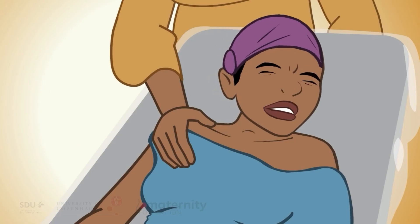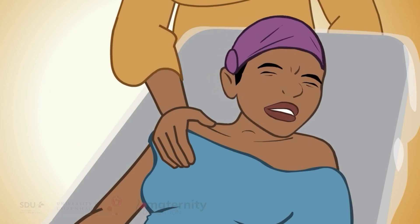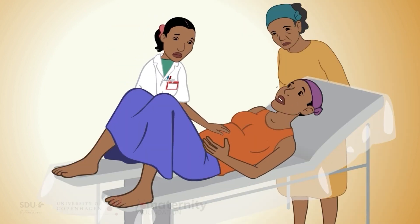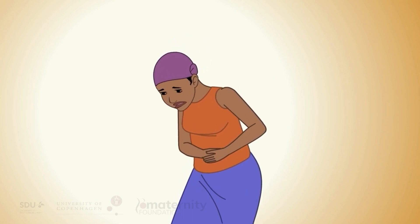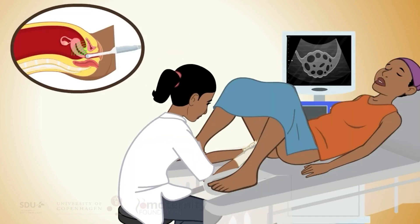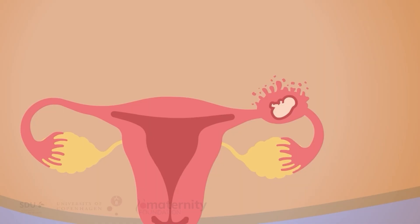Also consider ectopic pregnancy if there is pain beside the uterus either at abdominal or vaginal examination, strong abdominal pain with local or generalized defense — that is a tense and tender abdominal wall. If ultrasound is available, an ectopic pregnancy should be suspected if no intra-uterine pregnancy has been seen. If there is free fluid behind, beside, or above the uterus, a ruptured ectopic pregnancy must be suspected as the fluid might well be blood.